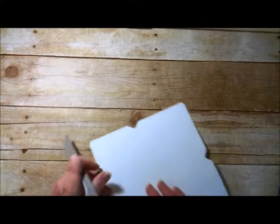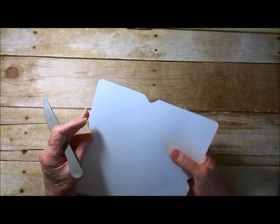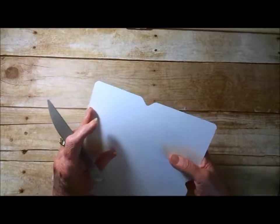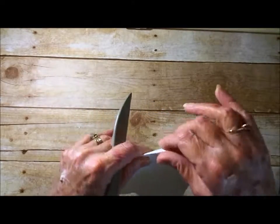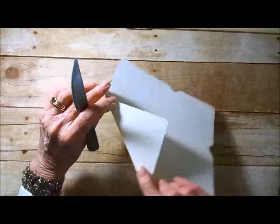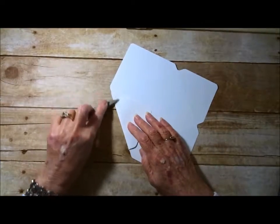I will say if you're using the envelope paper or the designer series paper, you're only going to want to finger press your score lines. Because we're using cardstock which is heavier, we're going to go ahead and burnish all of our score lines.